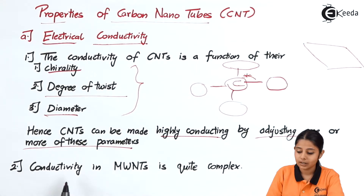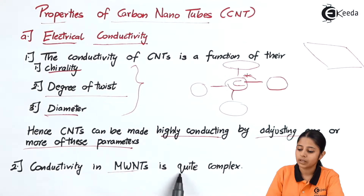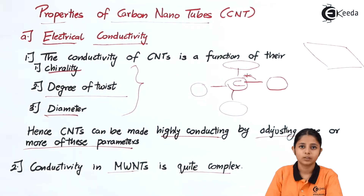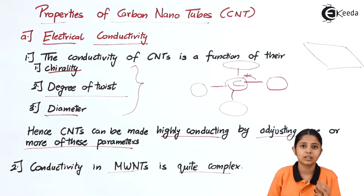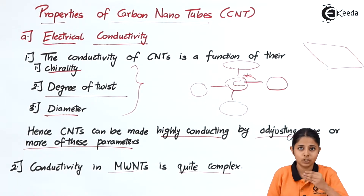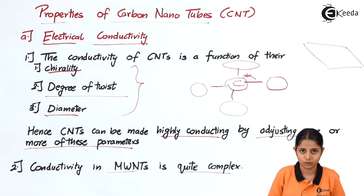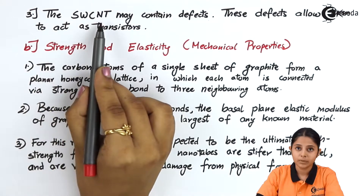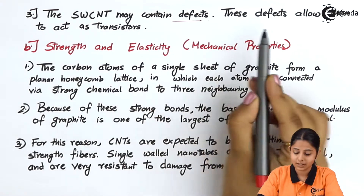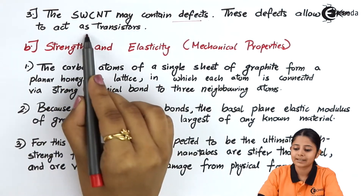The conductivity of multi-walled carbon nanotubes is quite complex. There are two types of carbon nanotubes: single-walled and multi-walled. A single-walled carbon nanotube is made up of one sheet, while multi-walled carbon nanotubes are made up of many sheets rolled together, resulting in complex electrical conductivity. Single-walled carbon nanotubes may contain defects, which allow them to act as transistors.